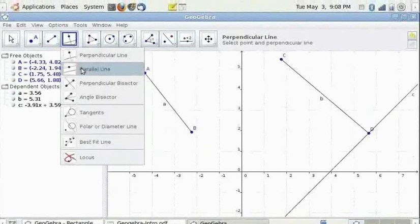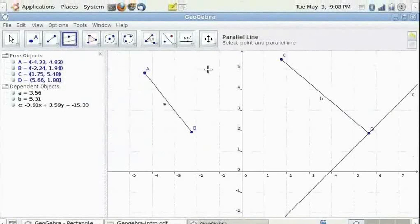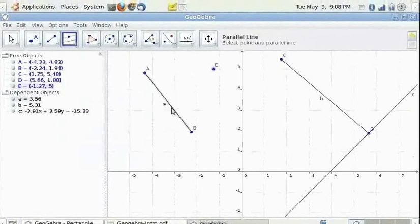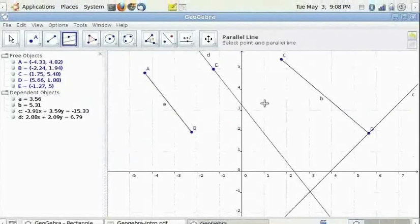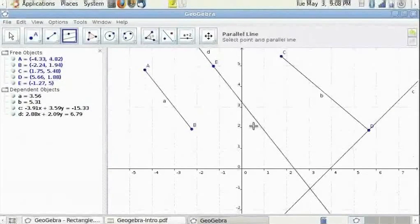A parallel line, I will click on a point anywhere here and select AB. I get a parallel line to AB through point E.